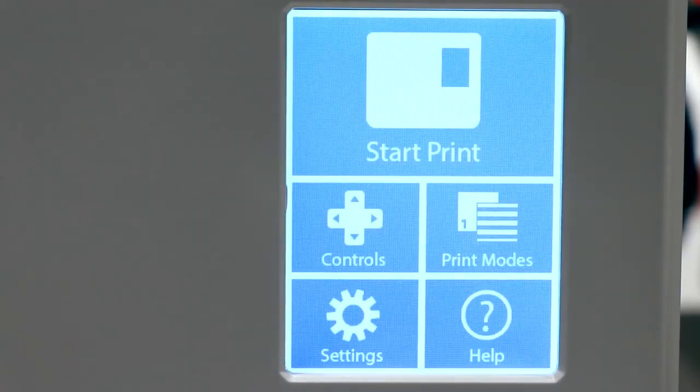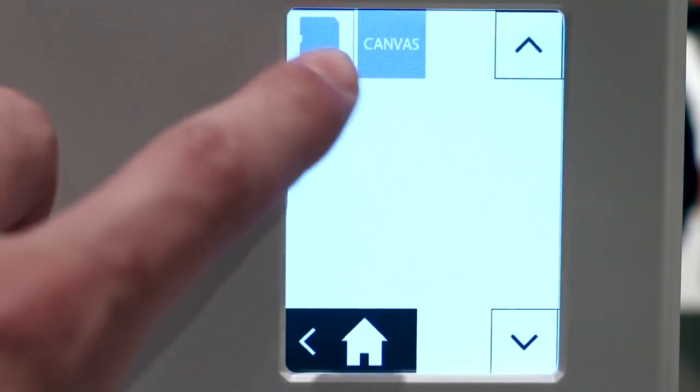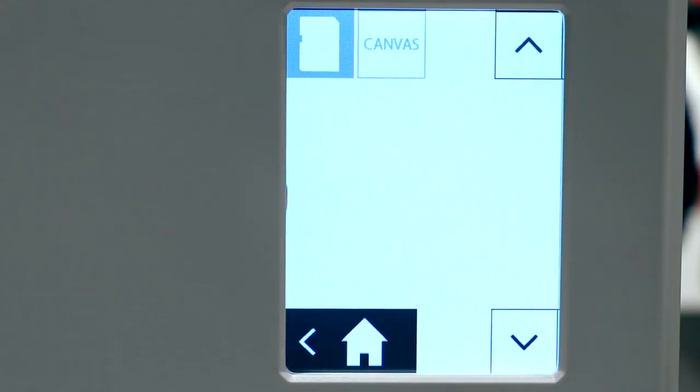Great, now we're ready to go. We'll select Start Print and select the SD card icon. We can see that the file shows up is also the same as our project name on Canvas. We simply select the file to begin.